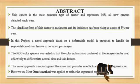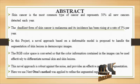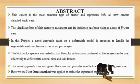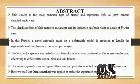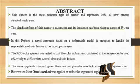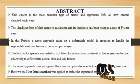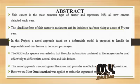The RGB color space is converted so that the color information contained in the image can be used effectively to differentiate normal skin and skin lesions. The difference in the color channels are combined together to define the speed function and the stop criteria of the deformation model.